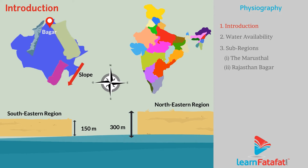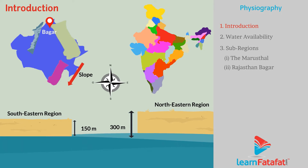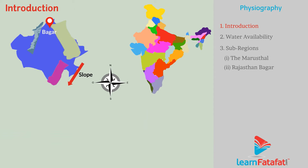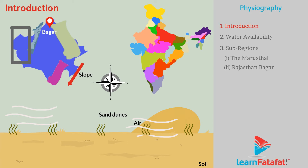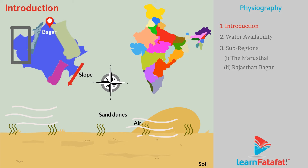Small hills are present on the west boundary of Bagar. The sand dunes are spread over the western part of the region. Sand dunes are sand formations created when sand flowing with the wind accumulates at a place.